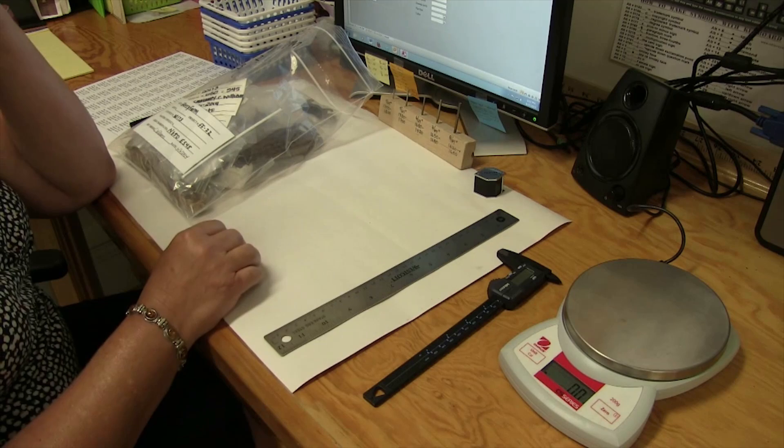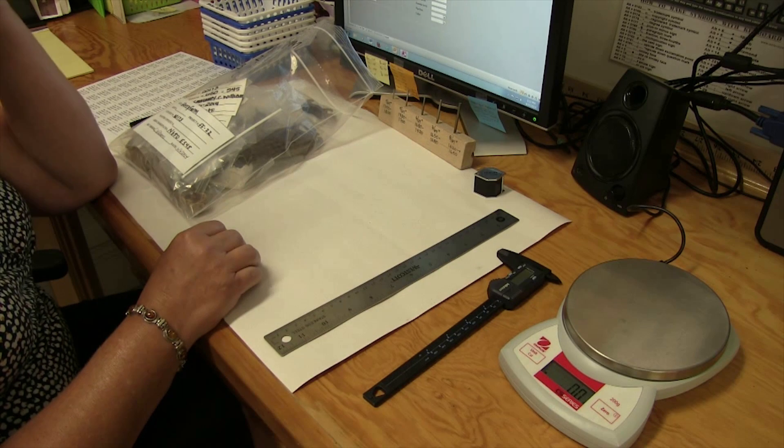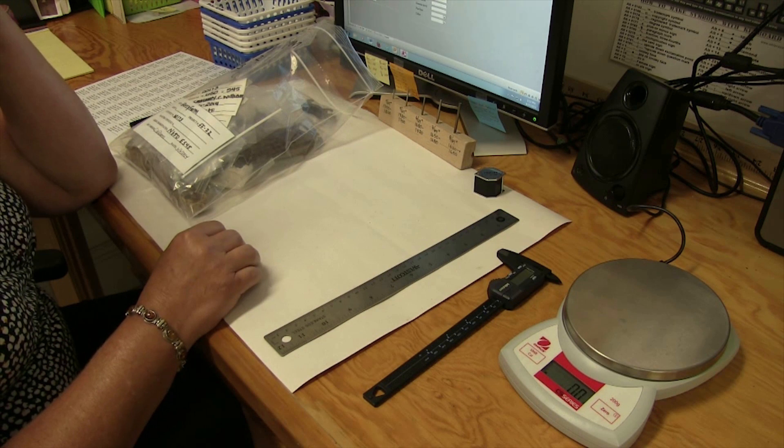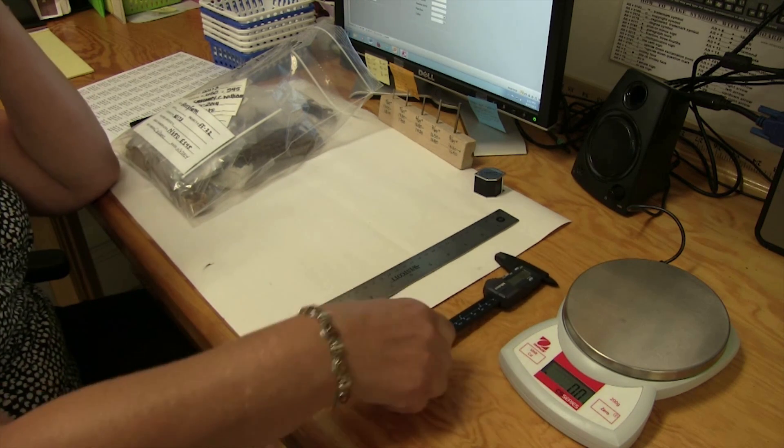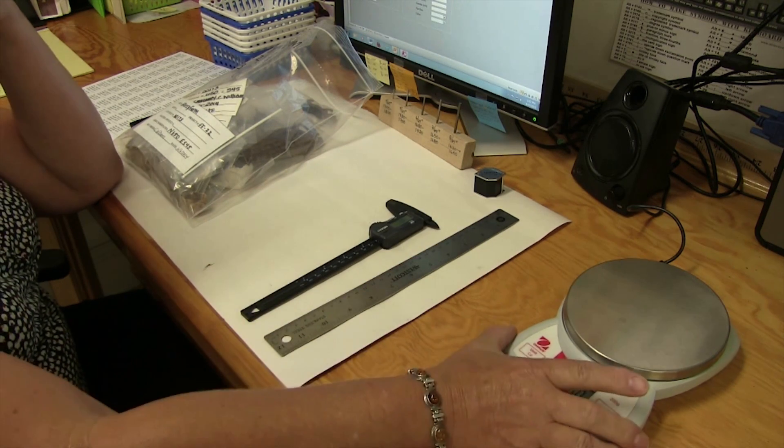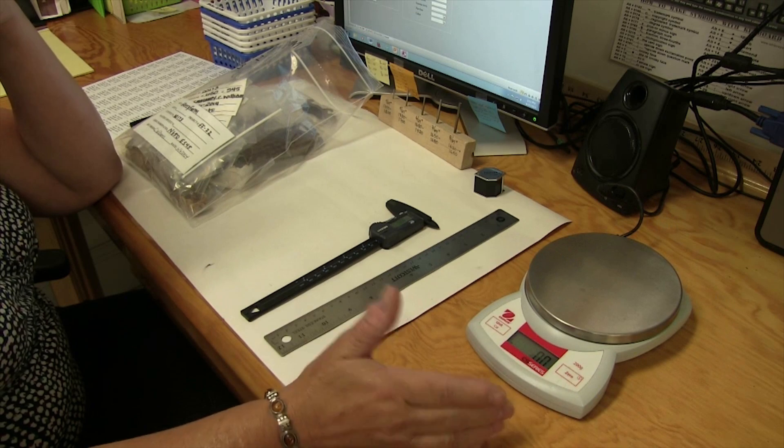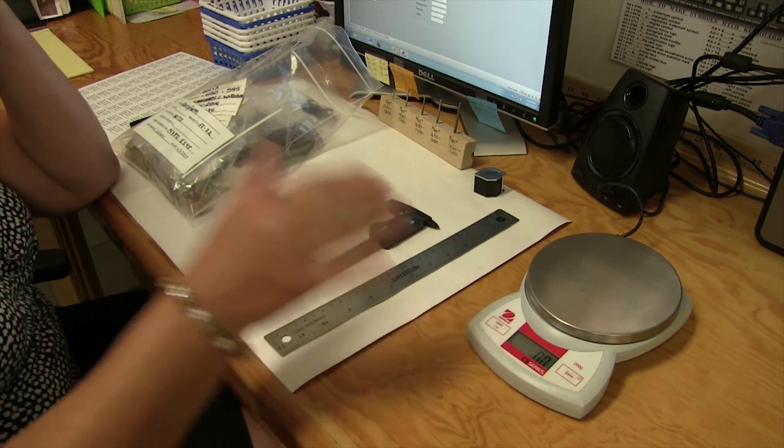The tools that we need for cataloging are very simple. Of course we do a lot of measuring, so we have a ruler and we have a different kind of ruler. We have a scale because besides measuring, we weigh everything.